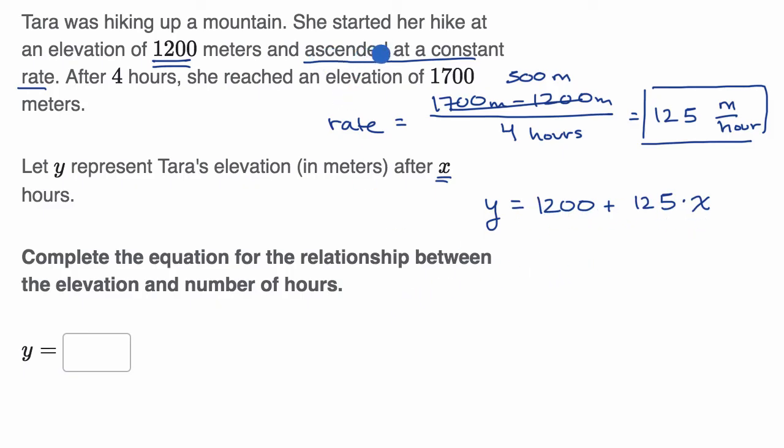this is going to be a linear equation because she's ascending at a constant rate. You could say the slope-intercept form for a linear equation is y is equal to mx plus b, where b is your y-intercept. What is the value of y when x is equal to zero? And you say, all right, when x is equal to zero, she's at an elevation of 1,200.